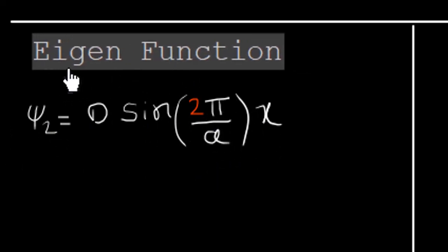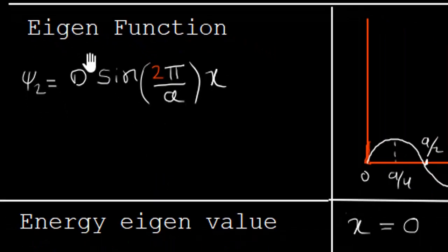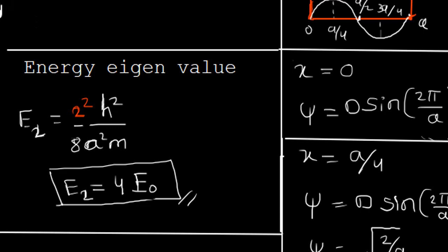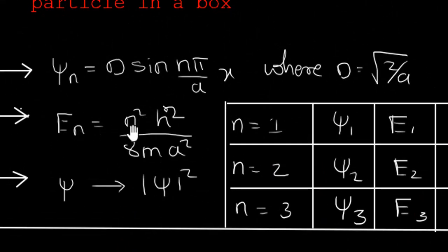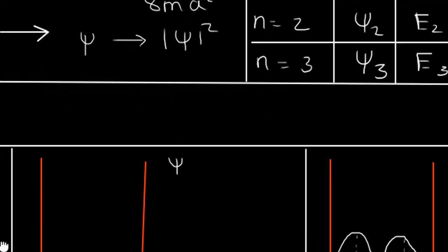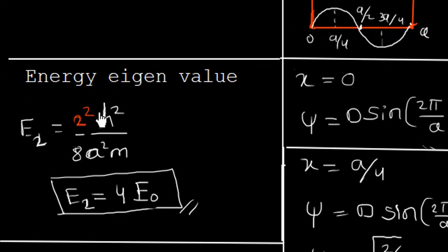Now let us find the energy eigenvalue for n=2. Substituting into Eₙ = n²h²/(8ma²): n² = 4, so E₂ = 4h²/(8ma²) = 4E₀. Therefore E₂ = 4E₀.